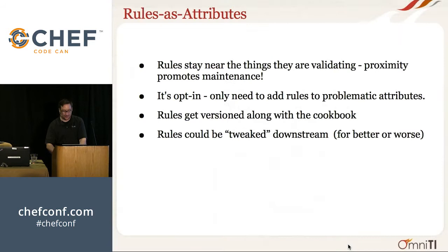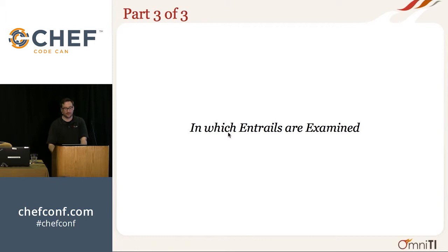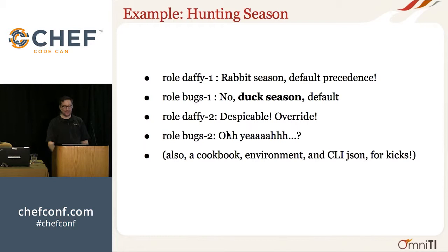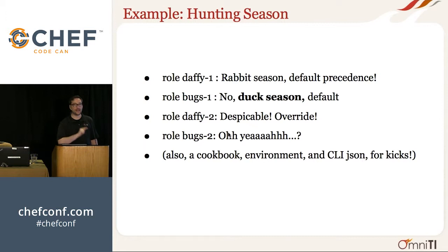On to the more experimental stuff: tracer, in which entrails are examined. Validation ensures the final value is sane, and there's 'node attributes debug value' which can dump each final value at each precedence level. But since we're all using default most of the time, that doesn't help much. So I wanted a way of finding out every time something changed — every time it was set, cleared, or clobbered by a hash assignment — with full information about when, where, and how that happened.